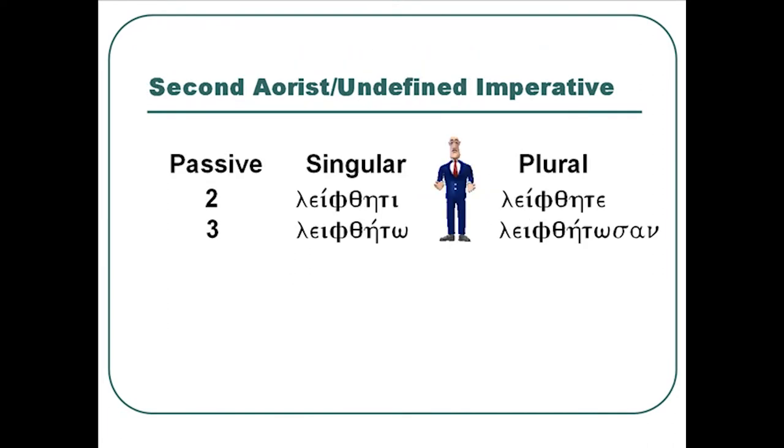And we've got our second aorist passive here. And you see the forms are leiphthēti, leiphthētō, leiphthēte, leiphthētōsan. And you'll notice that the theta-eta is stuck in there with our t-toe-to-to-tōsan form endings. And then you'll notice that the p goes up to a phi because of the volatization of the theta being next to the p. Translation: be gone, let it be gone. Passive kind of translation for these. So just get the chant down and these endings will become apparent. When you see them, you'll recognize them. Just remember the tap dance chant.